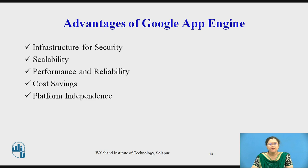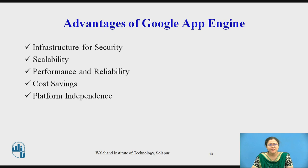The different advantages of Google App Engine include: infrastructure for security purposes, it is easily scalable, it has good performance and reliability, and it offers cost saving — you don't need to buy hardware or make a setup, as a readily available setup is there. There is also platform independence — there are no language restrictions, and you can deploy your application in whichever language you prefer.